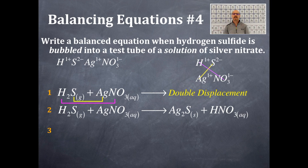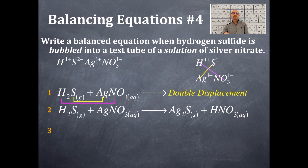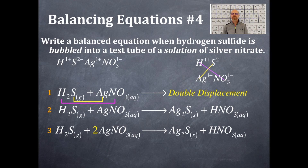So those are my two products: Ag₂S (solid) and HNO₃ (aqueous). The name of HNO₃ is nitric acid. Now we're going to balance this chemical equation. Start with the most complicated formula — Ag₂S — it has the most unusual elements. How many silvers on the product side? Two. How many on the reactant side? One. So I put a two in front of AgNO₃ on the reactant side. That balances the silvers.